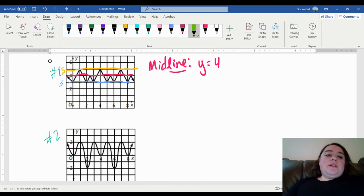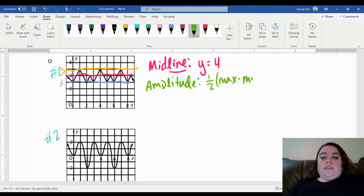Now to find the amplitude, that actually is a little bit easier. Okay, we have a nice little formula that is available for you, which is one half times your maximum minus your minimum.